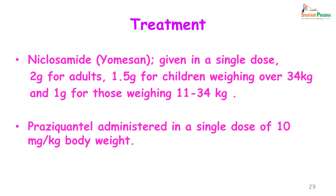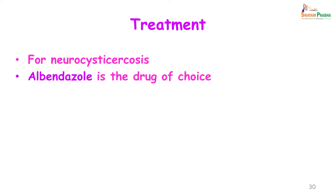Treatment for adult worm infection: we usually give niclosamide or praziquantel. In the case of cysticercus cellulosae, praziquantel is often the drug of choice. For neurocysticercosis, albendazole is considered the drug of choice because it has a slightly anti-inflammatory effect and penetrates well into the brain.